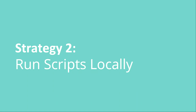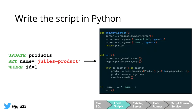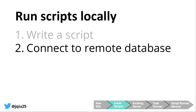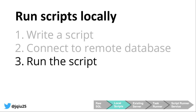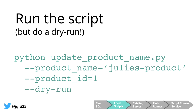This brings us to our next strategy: writing scripts and running them locally. To run scripts locally, we first start by writing the script — you take your SQL logic and convert it to code in your programming language of choice, mine being Python. I would usually also add an argument parser to make scripts reusable, especially if I plan to use the logic again in the future — for example, to update product two to Julie's other product. Next, we form a connection to the production database using a VPN or an SSH gateway, and then run the script from your terminal. I often like to write scripts with a dry-run flag so I can preview results before committing changes to production.